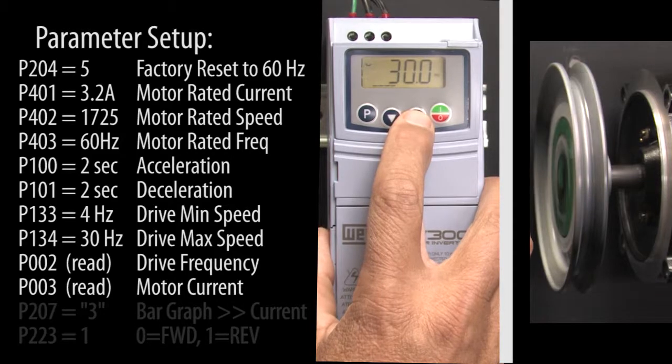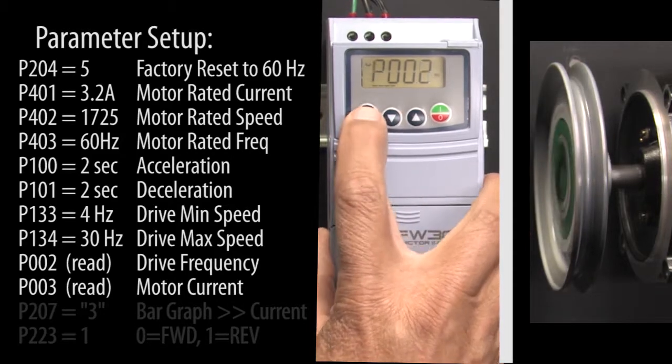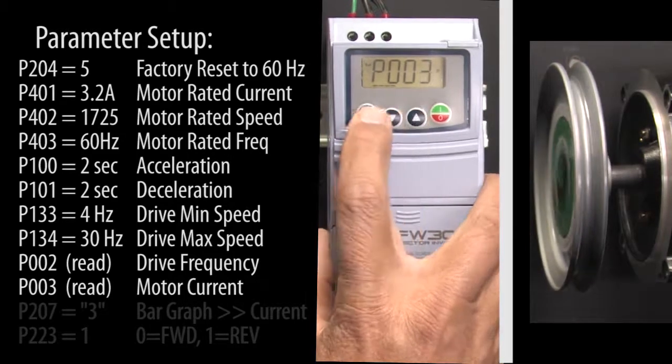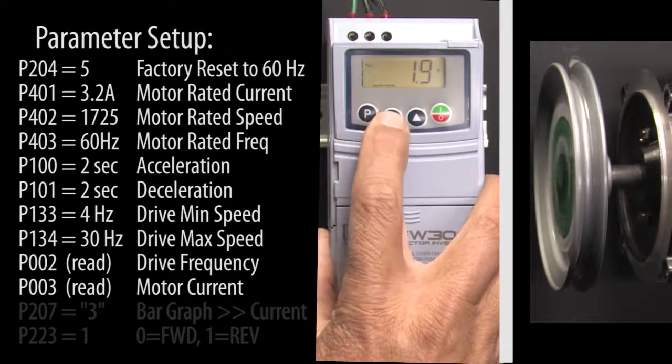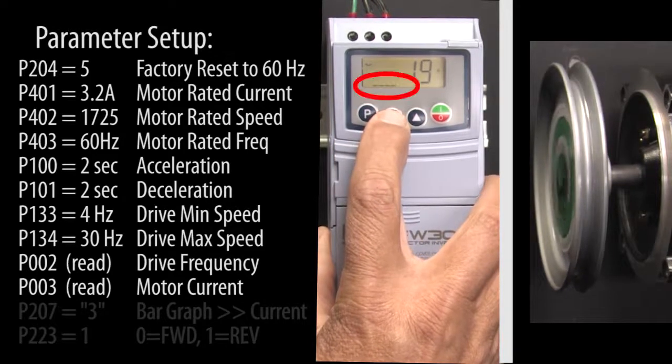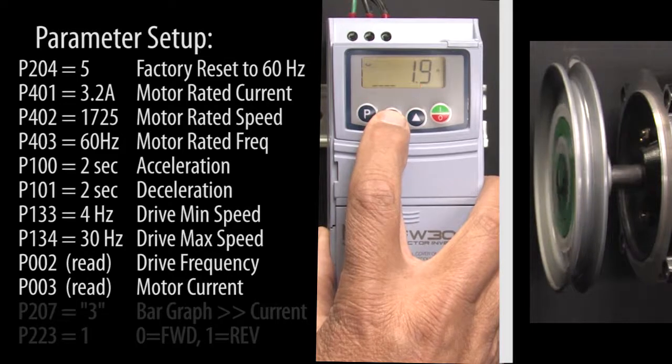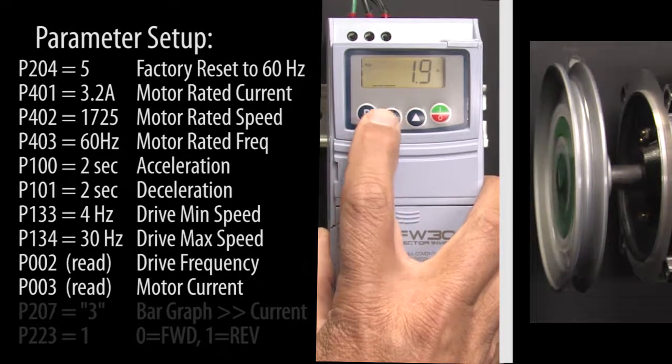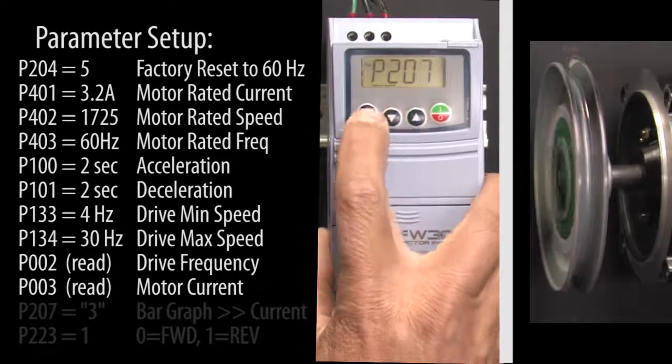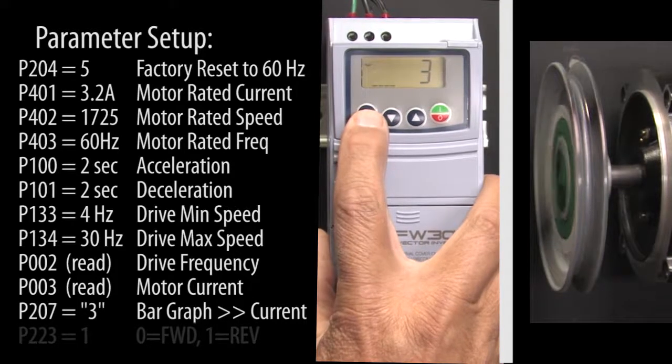To view the motor's current, press P to exit the frequency parameter. Go to parameter 3 which is the motor's current and press P to see the value. This bar graph down here is also showing the motor current because the bar graph parameter, which is parameter 207, says display parameter 3, the motor's current.